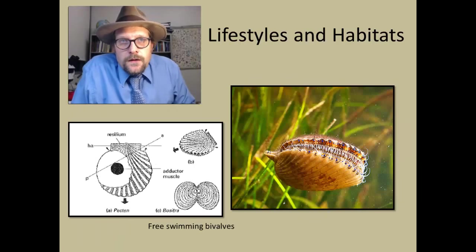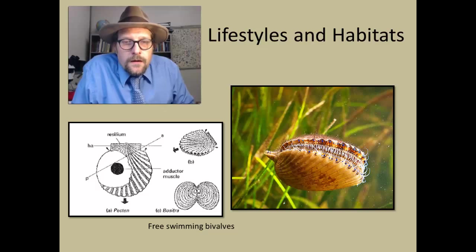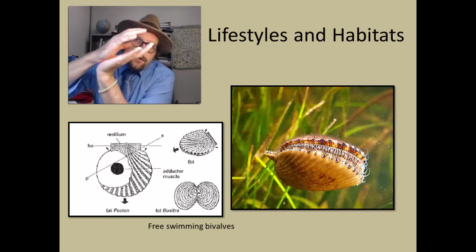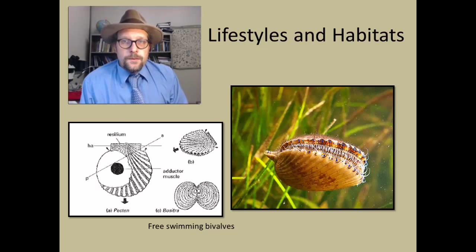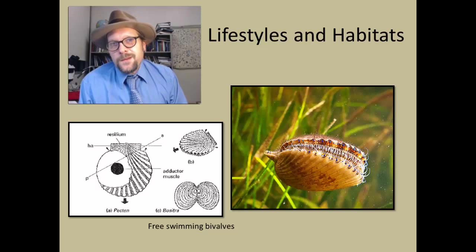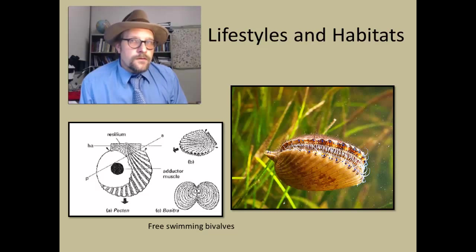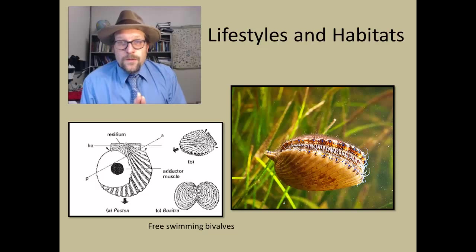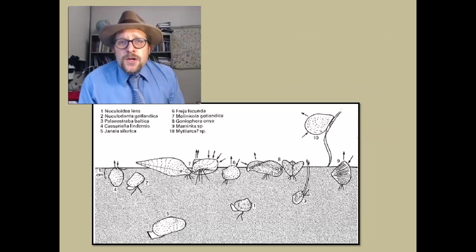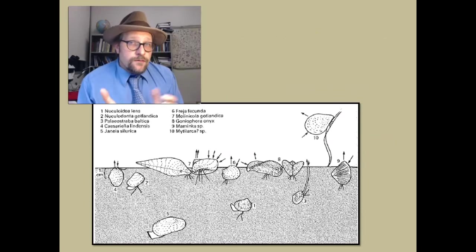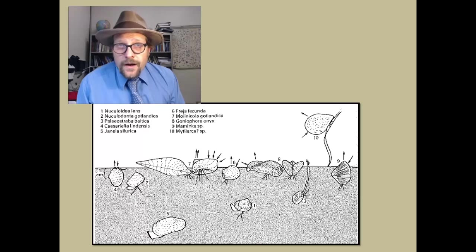Not all bivalves are sessile. Scallops are mobile and free swimming. They use the two shells to propel themselves through the water column and can move about on the ocean floor. They have a long row of eyes that can help them see where they are going. Other mollusks also develop eyes and light sensing organs, which are needed when animals become mobile and need to see where they are going. Bivalves occupy a huge range of habitats, including freshwater systems. All bivalves are aquatic, and let's see with the next class of mollusks that there are some mollusks that made the transition to living on land.